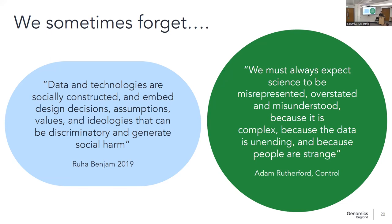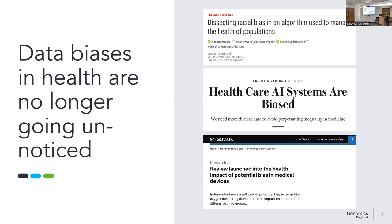I also wanted to quote Adam Rutherford, who had a really pithy answer: 'We must always expect science to be misrepresented, overstated, and misunderstood, because it's complex, because the data is unending, and because people are strange.' When we try to understand the way data bias manifests, we've got to recognise that people make odd decisions, and we are all biased. Things have hit mainstream when your parents know what you're talking about when you say you work in data bias. The issue of biased AI, biased healthcare, biased datasets is elevating in public consciousness — including a review launched by then Health Secretary Sajid Javid into bias of medical devices.